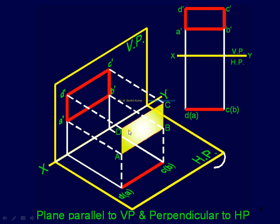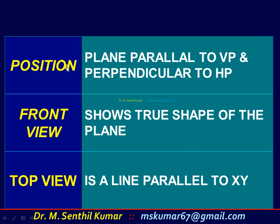The next possibility: the plane ABCD rectangle is now parallel to VP but perpendicular to HP. In the front view, you can see the true shape of the plane completely; the top view is a line. Front view shows A'B'C'D', top view is a line cd. You have to start the view in which you are able to get the plane completely in its true shape — in this case, start the front view first, then complete the top view. Plane parallel to VP and perpendicular to HP: front view shows the true shape, top view is a line parallel to XY.